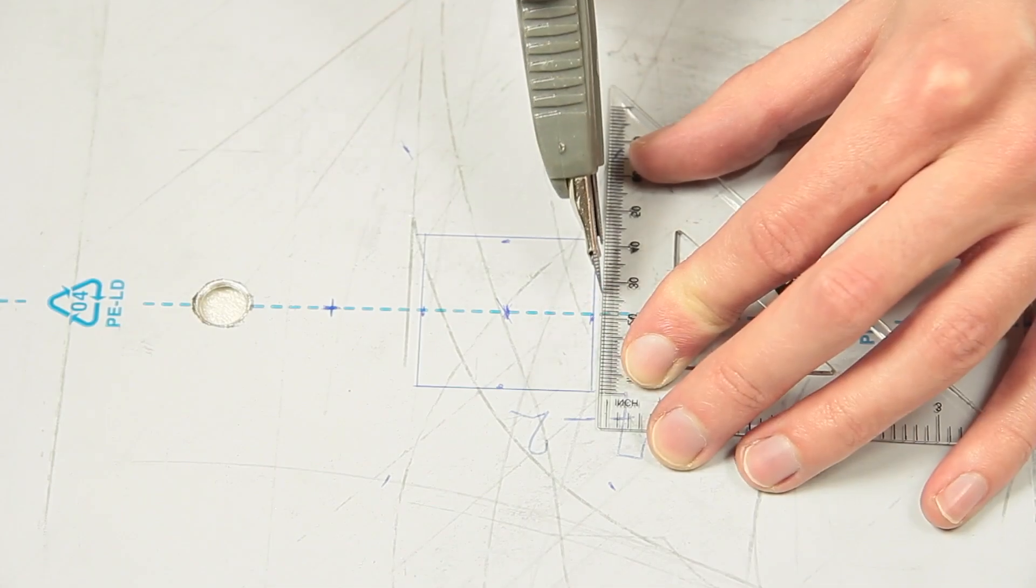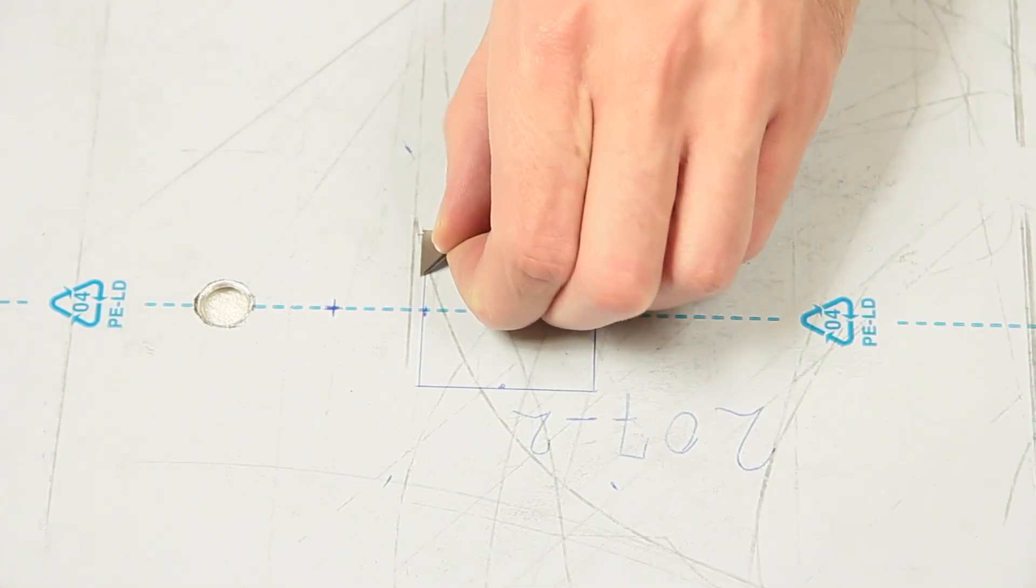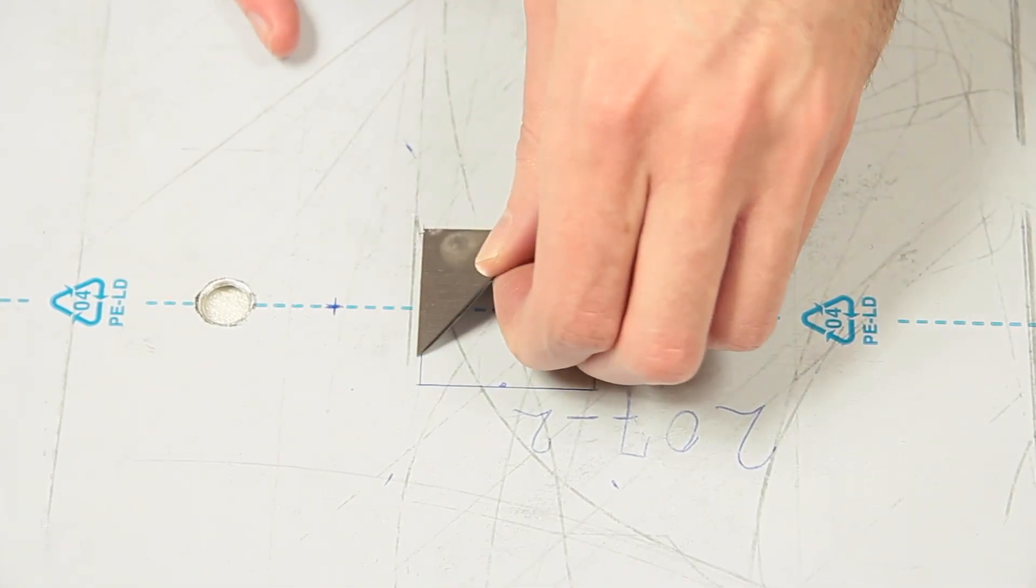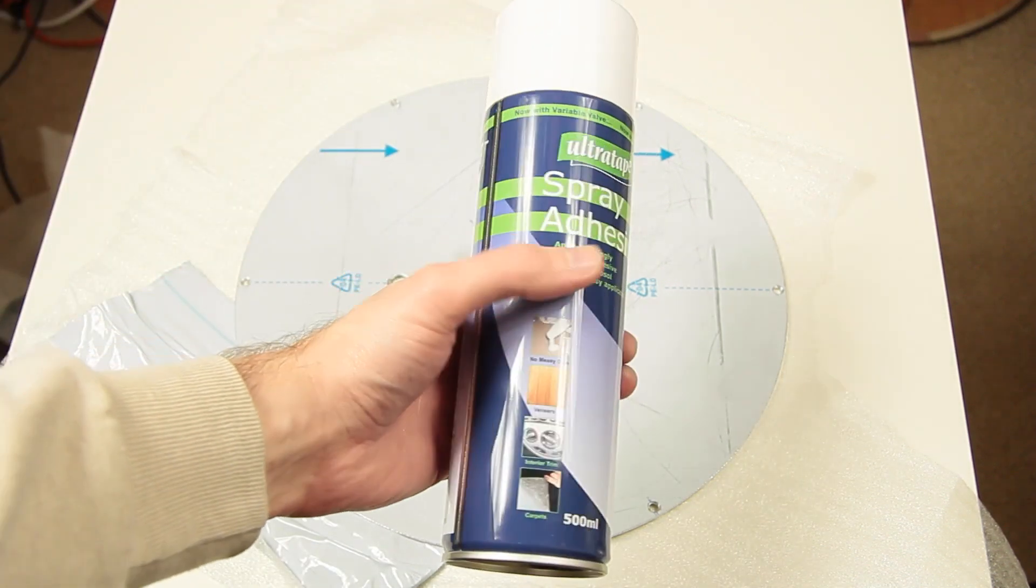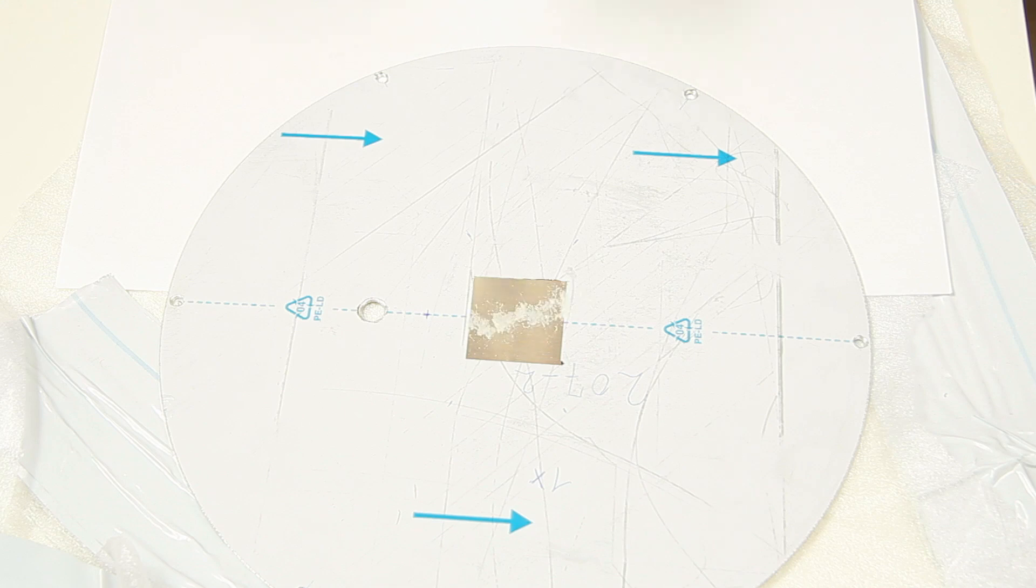Time to cut out the square in the middle of the pad. The protection layer gets removed only at this spot. We want to use spray adhesive to paste the decoupler onto the disc. This way we only spray the required spot.